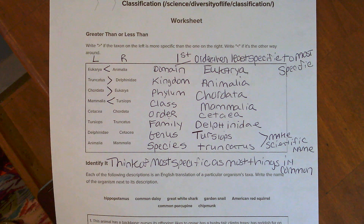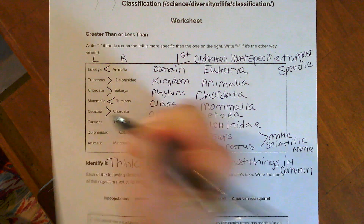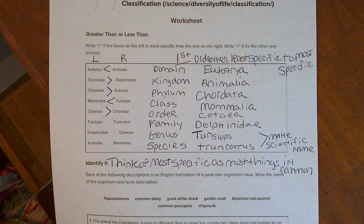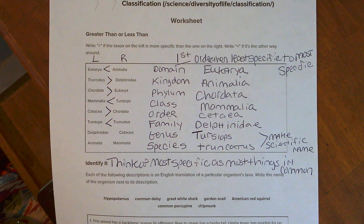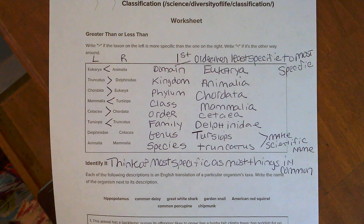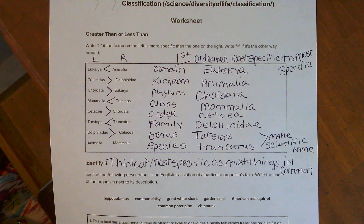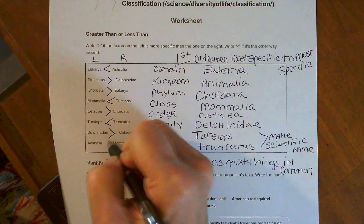Then we have the other two words — let's use our list. It looks like chordata is further up, so it's got to be smaller. Then we have our two T words: the one with the capital T first is less specific, so we put it like this. And it looks like they're listing the family name of a dolphin and comparing it to its order — the family name is more specific. The last one is Animalia versus Mammalia: Animalia is much further up and Mammalia is much further down, so it goes like that.